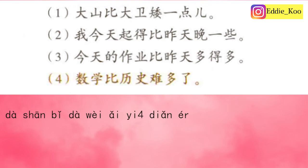Sentence number one: 大山比大卫矮一点. 大山 is a little shorter than 大卫. Let's break down the sentence. 大山 is a boy's name — 大 means big, 山 literally means mountain. 比 is the keyword of today's grammar structure; literally 比 means to compare. 矮 means short, 一点 means a little, so 矮一点 means a little shorter.